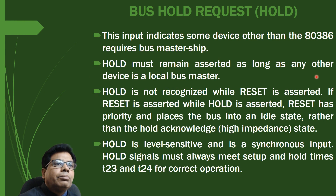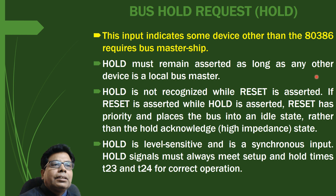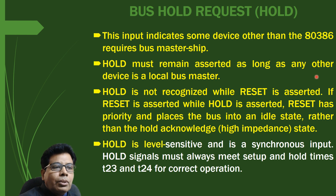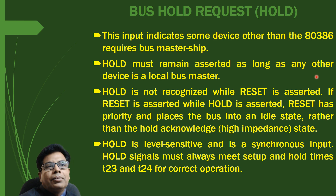Let us start with the bus hold request. This input indicates some device other than the 80386 requires bus mastership. HOLD must remain asserted as long as any other device is a local bus master. HOLD is not recognized while RESET is asserted. If RESET is asserted while HOLD is asserted, RESET has priority and places the bus into the idle state rather than the hold acknowledge, that is high impedance state. HOLD is level sensitive and is a synchronous input, and must always meet setup and hold times T23 and T24 for correct operation. When HOLD is held high, that means some other master is requesting use of the buses.